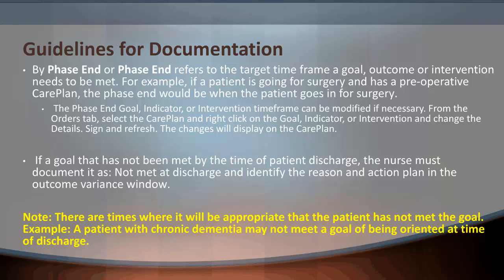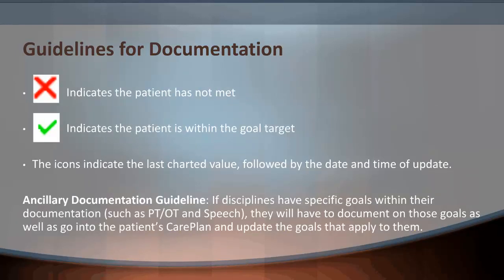If a goal has not been met by the time of patient discharge, the nurse must document it as Not Met at discharge and identify the reason and action plan in the outcome variance window. Please note there are times where it will be appropriate that the patient has not met the goal — for example, a patient with chronic dementia may not meet a goal of being oriented at time of discharge. A red X icon indicates the patient has not met the goals; a green check mark indicates the patient is within the goal target. These icons indicate the last charted value followed by the date and time of update.